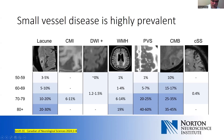Cortical superficial siderosis is a more concerning finding that represents the most specific finding for cerebral amyloid angiopathy. That's much less common, but we do see it.